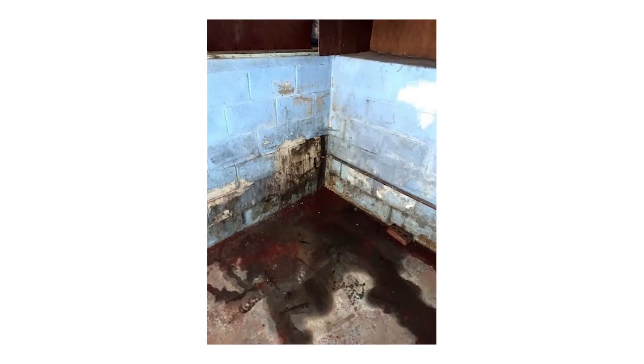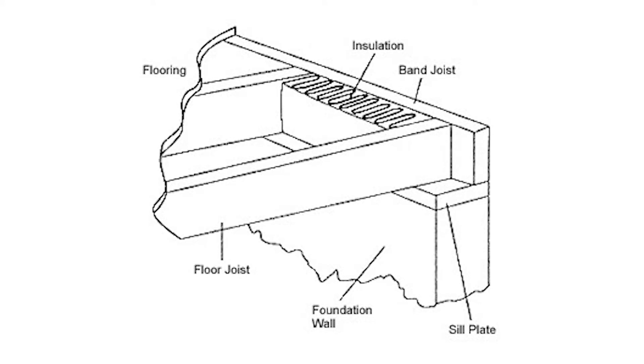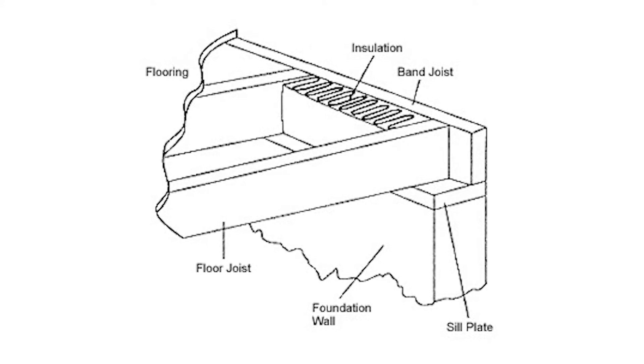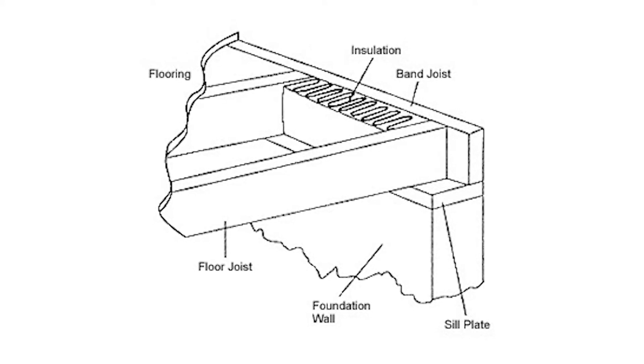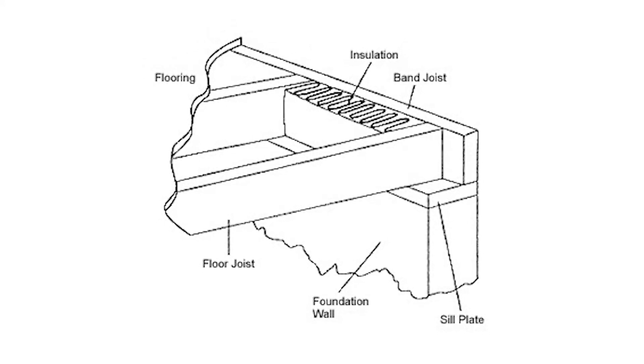What happens is a few floor joists are taking a good amount of weight from the main level of your home, and the moisture starts to weaken that wood, allowing it to sag over time.